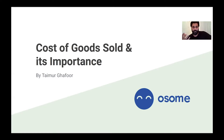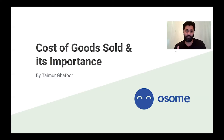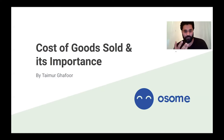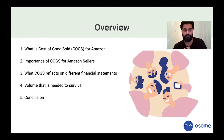Cost of goods sold is an accounting concept that helps you and your business identify what your actual product is costing you, and how much profit you can get out of it. You do your market research and find the best products, but cost of goods sold is the strategy that generates end results for your Amazon products. This short presentation will cover what cost of goods sold actually is and why it's important for Amazon sellers.